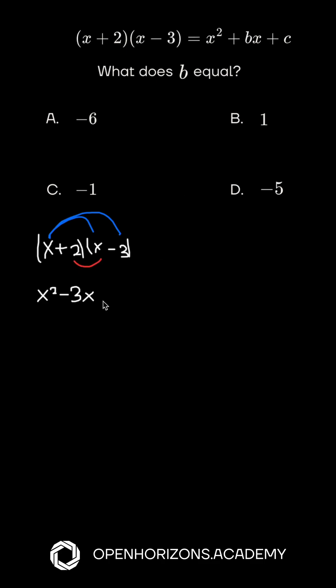After that, we multiply from the other term. So 2 times x, which is positive 2x.